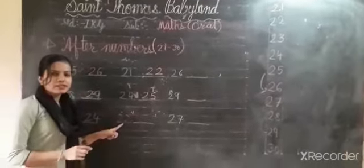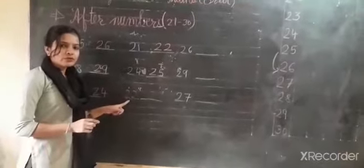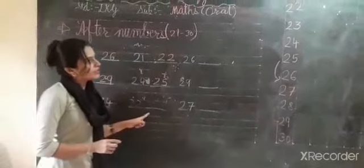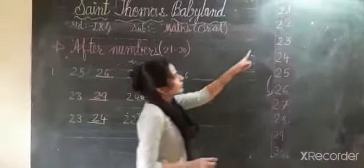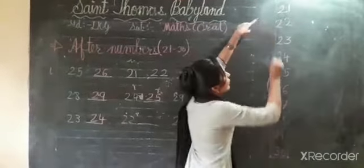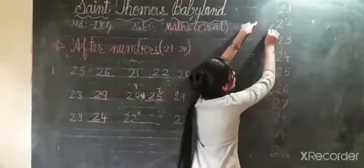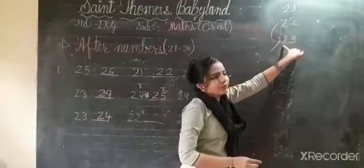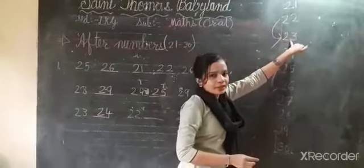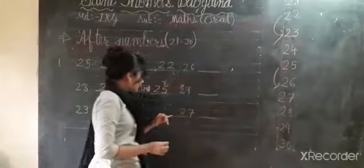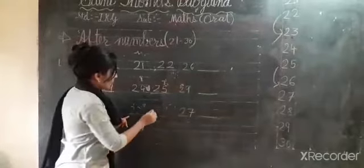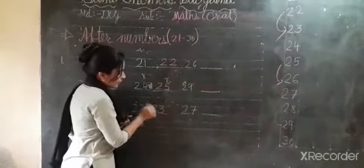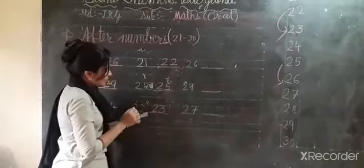Then what is this? This is 22. Where is 22? Here. So after 22, what will come? 23. So I write here 23.